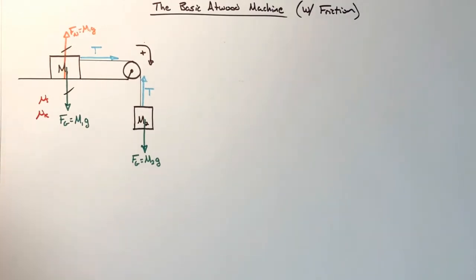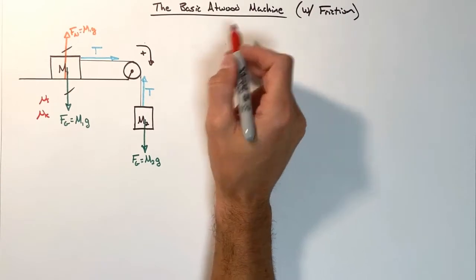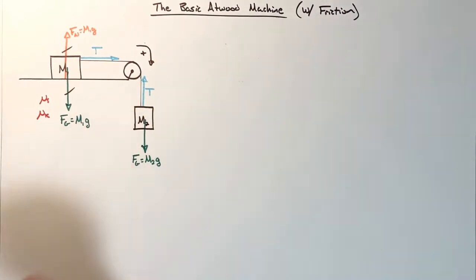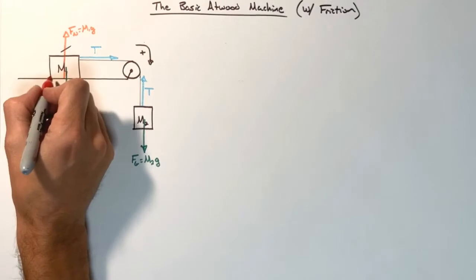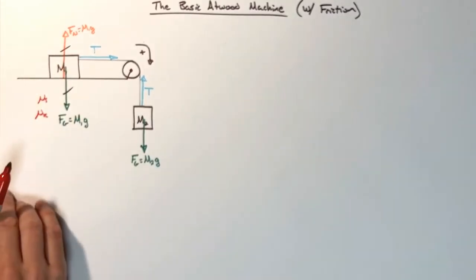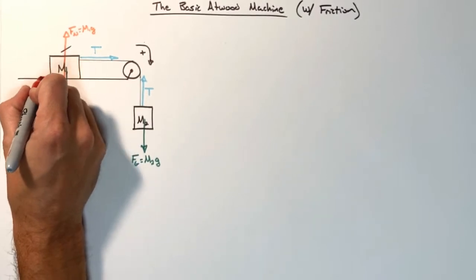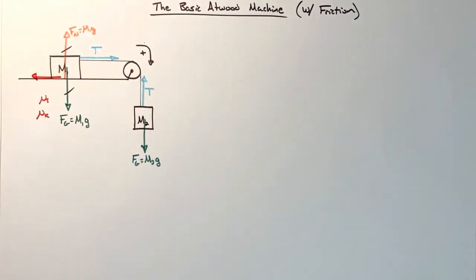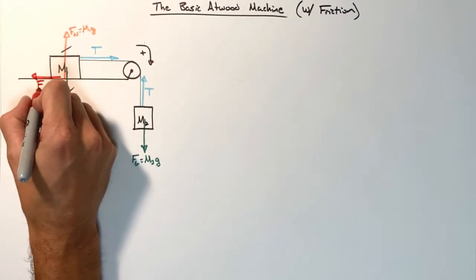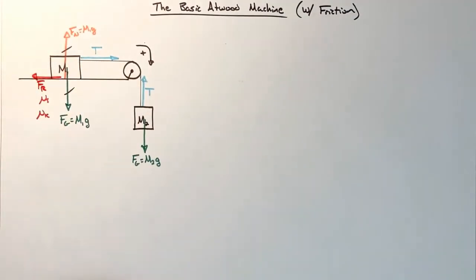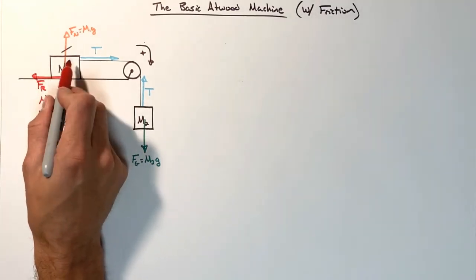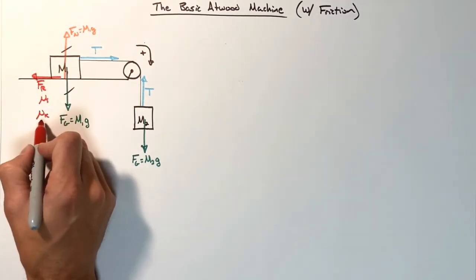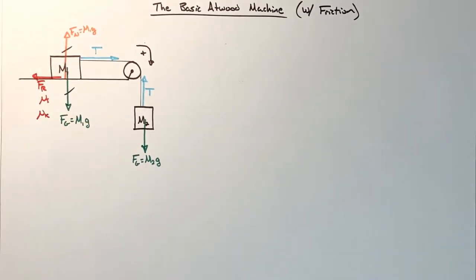Now, what makes this problem different from the other basic Atwood machine is friction. Friction is going to resist the motion of this block. So we're going to show friction acting between the ground and the block to the left. I'll just call this FR for friction. This could be static or kinetic, just depending on whether the block is sliding, in which case it's kinetic, or sitting still, in which case our friction is static.